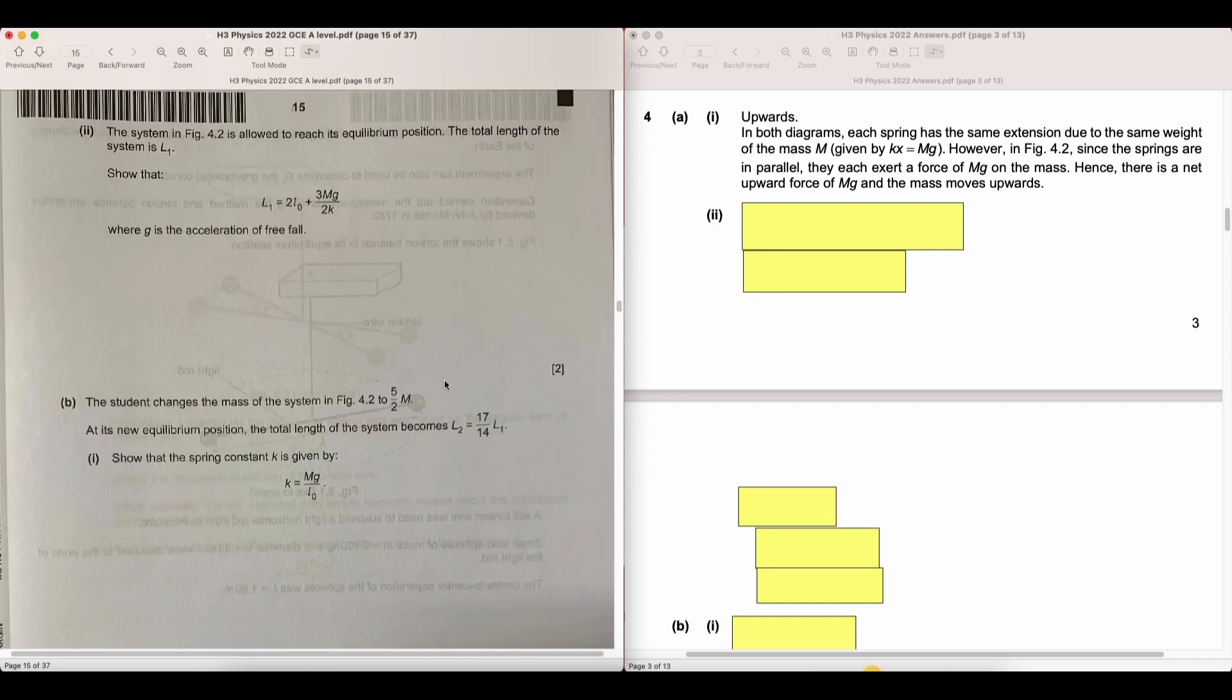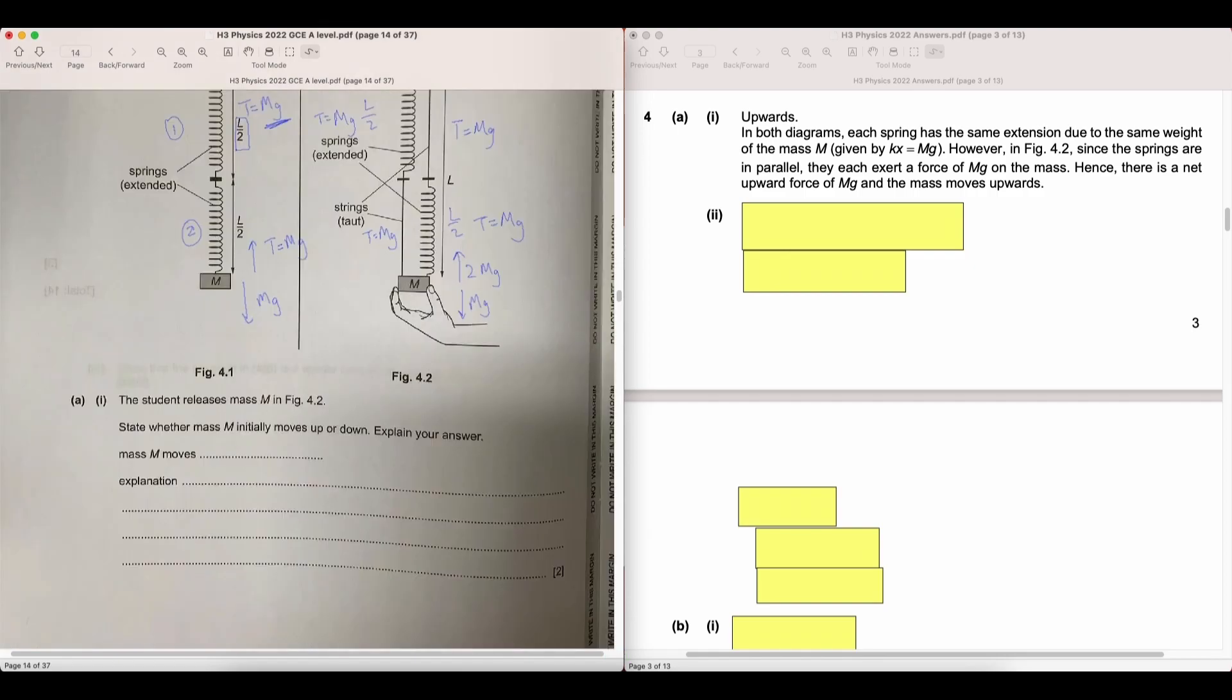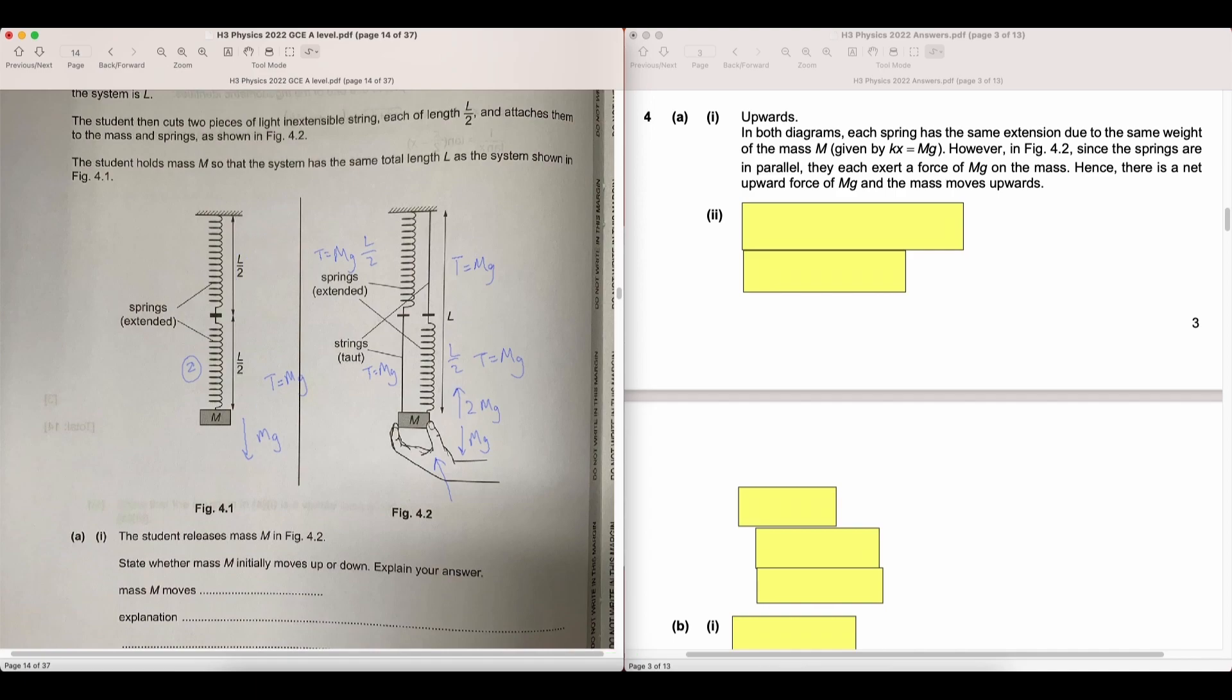Now in part 2, we are asked to find the length of the equilibrium position. And L1 is the final length that the system would go to after the hand releases the mass in figure 4.2. Now for this question, we need information from both scenarios. We need to find the equilibrium equation for both figure 4.1 and figure 4.2.